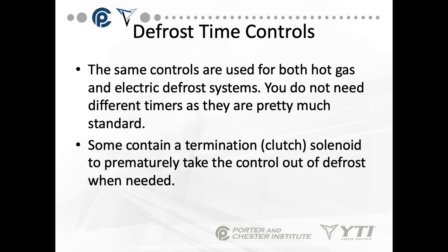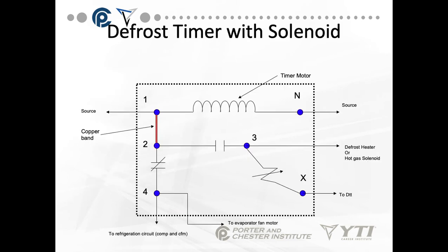Here we have a diagram of a defrost timer with a solenoid. These pins are numbered, and by looking at the time clock you can see where the numbers go. There's always a diagram that comes along with the time clock, usually on the inside of the door. Source voltage comes to pin 1. There's a copper band that connects pin 1 and 2. If you have different voltages — like low voltage on solenoid devices — you can use different voltage levels by removing this copper band and putting other sources. Between 1 and 2 we have our motor; between 1 and neutral, source goes on 1 and source goes on 2.